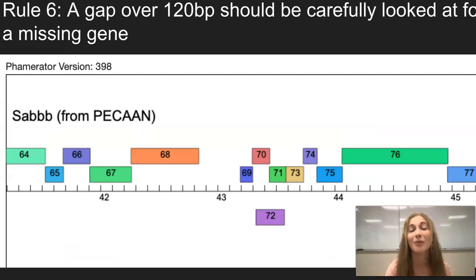Rule number 6 talks about when there's a large gap of over 120 base pairs, it should be carefully looked at for a missing gene. In this example, there is a 355 base pair gap between the gene 68 and 69. And after we look back at it, there actually was a missing gene between the two.